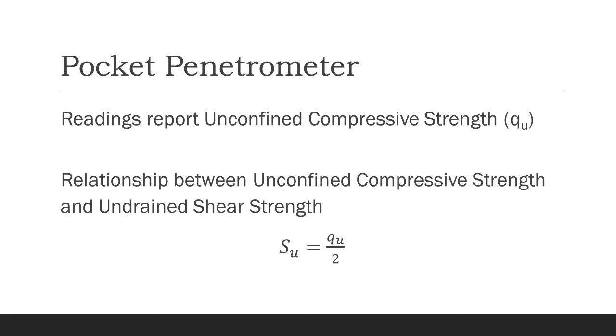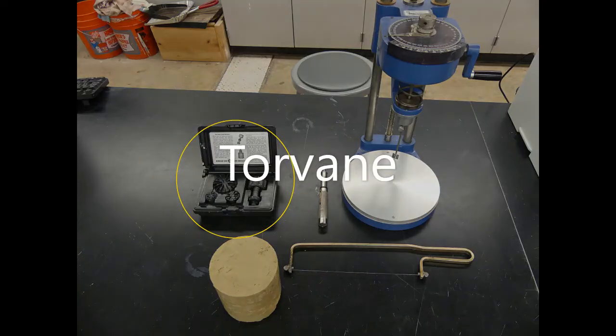From the pocket penetrometer, we can test the unconfined compressive strength of the soil specimen. To get the undrained shear strength, we divide the unconfined compressive strength by 2. With a reading of 3.9 kilograms per square centimeter, our undrained shear strength is 1.95 kilograms per square centimeter.